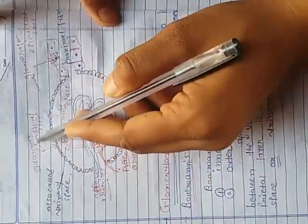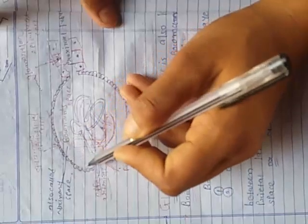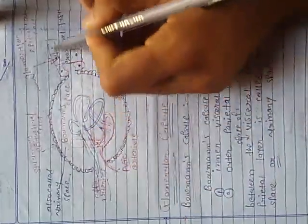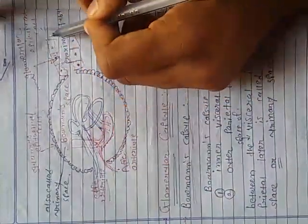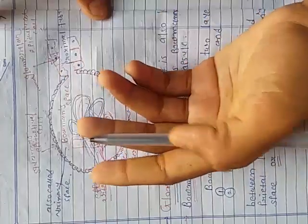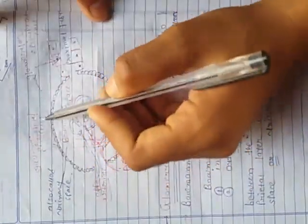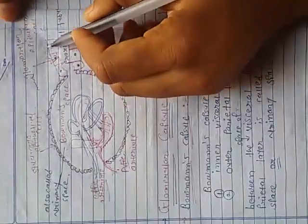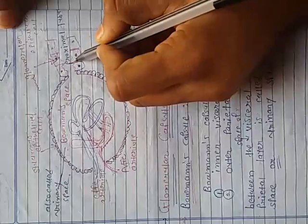The glomerulus is composed of squamous epithelial cells. The outer side has glomerular epithelial cells. The glomerular cells consist of squamous epithelium and glomerular epithelial cells, which connect to the proximal tubules.